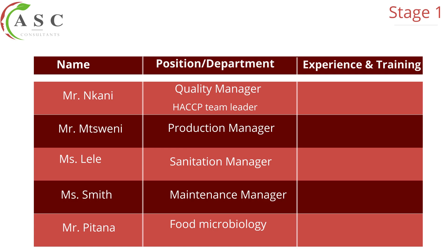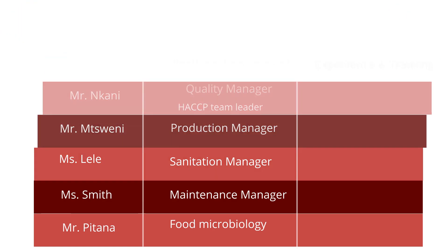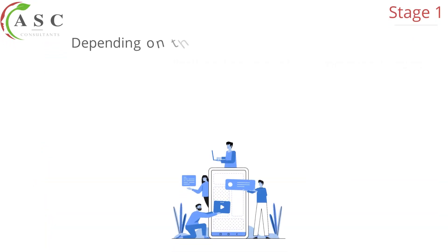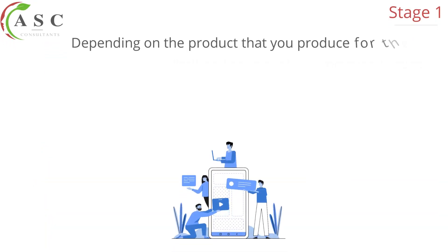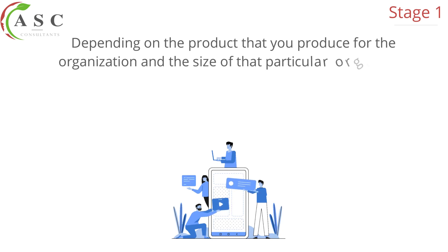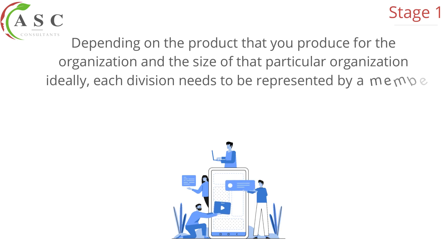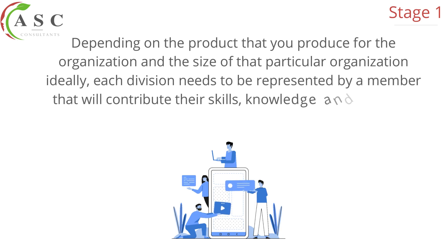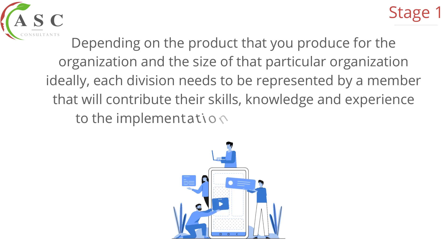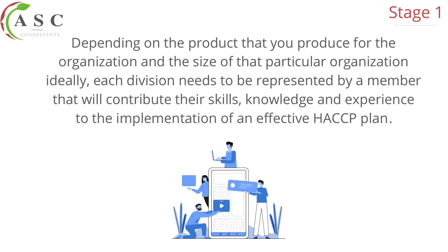The HACCP team leader or food safety team leader must have advanced training. It is very important that the HACCP team leader is familiar with all 12 stages of HACCP as well as how to draw a HACCP plan. Depending on the product the organization produces and the size of the organization, ideally each division needs to be represented by a member who will contribute their skills, knowledge, and experience to the implementation of an effective HACCP plan.